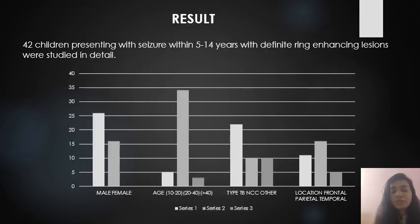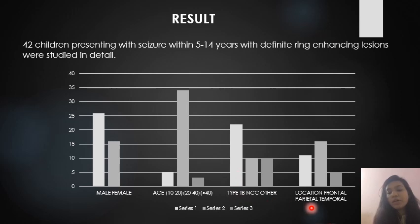Results: males are more predominant, particularly in the age group of 20–40 years. The most common type is tuberculosis, and the most common location is the parietal region.